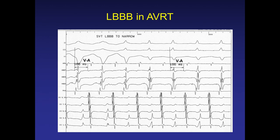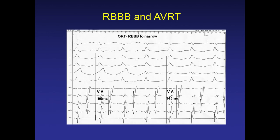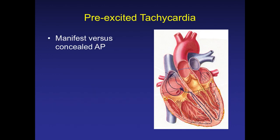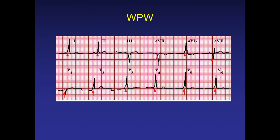During the EP study, we can see left bundle branch block on the superficial cardiac ECG. Similarly, another accessory pathway mediated tachycardia uses right bundle branch block, so conduction happens through the left bundle branch. Accessory pathways can be manifest or concealed. Concealed means on the surface ECG during sinus rhythm, the pre-excitation will not be seen.